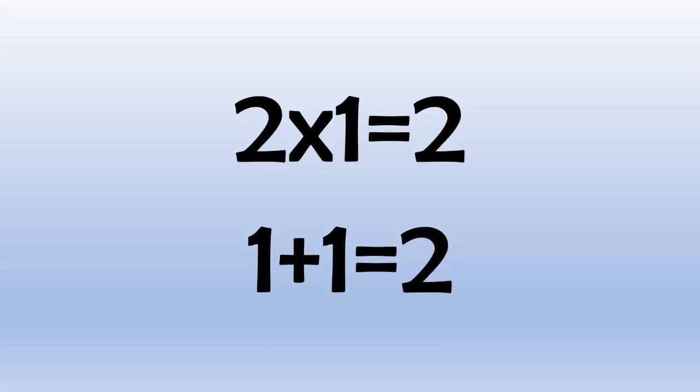2 times 7 equals 14, because 7 plus 7 equals 14. 2 times 8 equals 16, because 8 plus 8 equals 16. 2 times 9 equals 18, because 9 plus 9 equals 18.